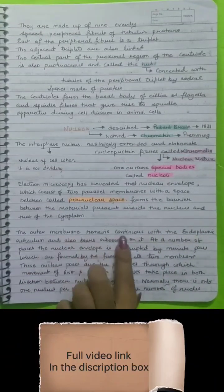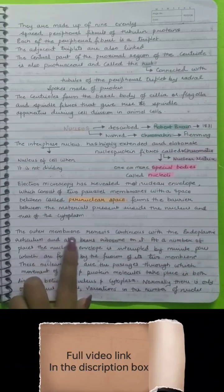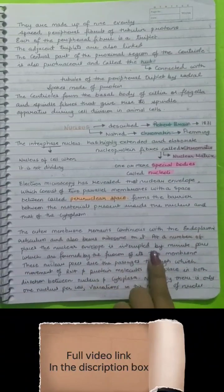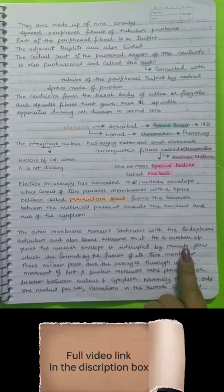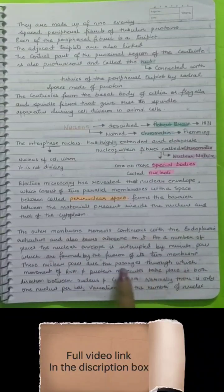The outer membrane remains continuous with the endoplasmic reticulum and also bears ribosomes on it. At a number of places, the nuclear envelope is interrupted by nuclear pores which are formed by the fusion of its two membranes.